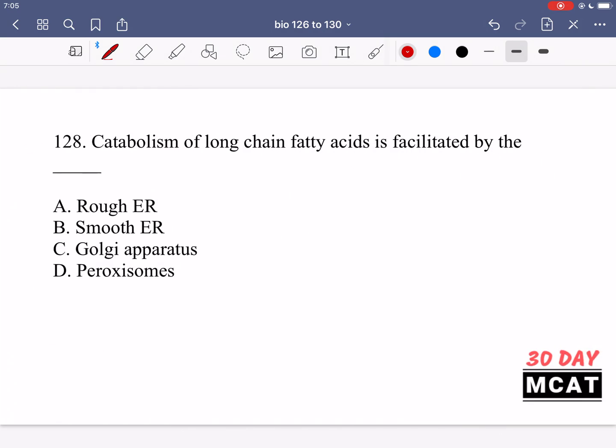In question 128 it says catabolism of long chain fatty acids is facilitated by the blank. So we're talking about catabolism, the breakdown of long chain fatty acids. That's a key word we're looking at in this question. Which organelle in the cell is responsible for this? It's not the rough or the smooth ER. The rough ER is for translating protein, that's where the ribosomes are. Smooth ER has other functions such as creating lipids as well as hormones, and those lipids would be for the plasma membrane, but it's not responsible for breaking down fatty acid chains, the long chain ones.